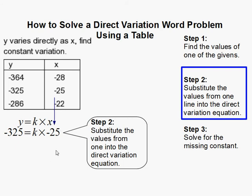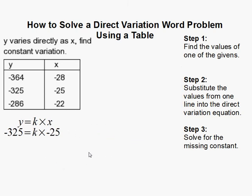So negative 25 here, negative 325 here. Lastly, we just need to solve for the missing constant k.